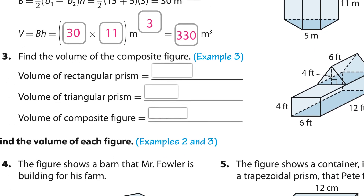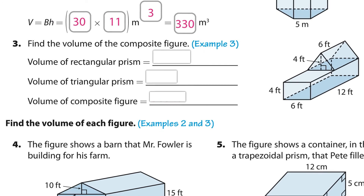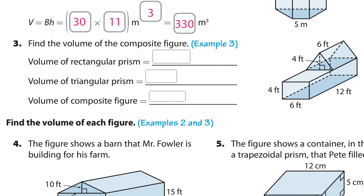Now we have a composite figure — a figure made up of two regular figures. Here we have a rectangular prism and a triangular prism, and when you put them together it's a composite figure. The volume of the rectangular prism is 12 × 6 × 4, which is 288 — you multiply those three together.